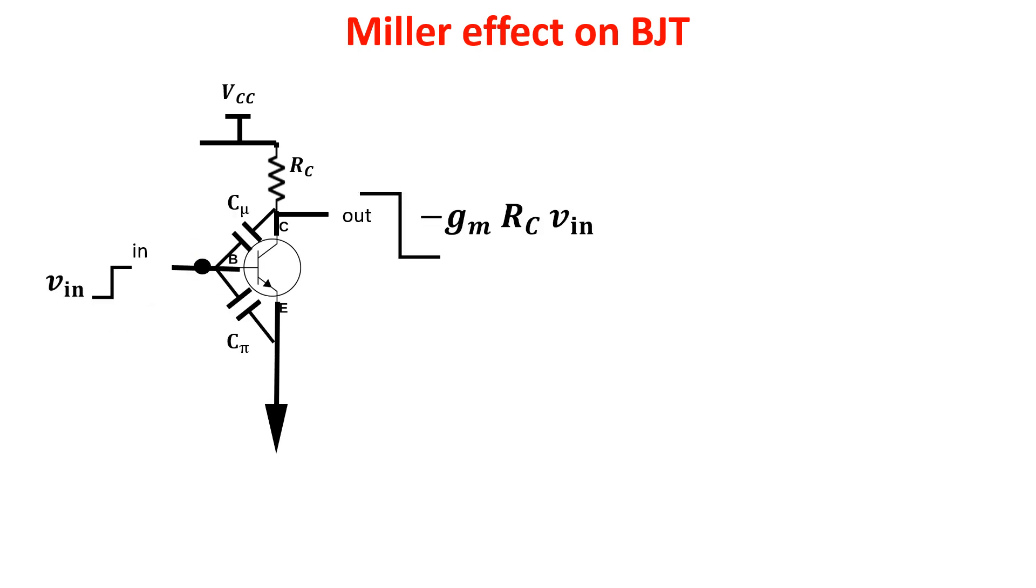Now we see what happens from the output perspective. Here basically we give a minus GM·RC·Vin pulse and we get a voltage drop across Cmu of (1 plus GM·RC) times Vin. So the charge is always this.